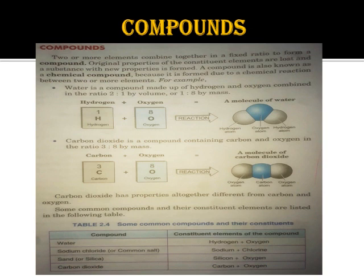Another example: carbon dioxide is a compound containing carbon and oxygen in the ratio 3:8 by mass. Three grams of carbon will react completely with eight grams of oxygen. When carbon and oxygen combine, they form carbon dioxide - CO₂.